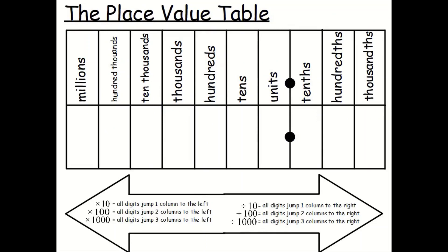Can you have a look at what it says at the bottom here? If you're multiplying by 10, all digits jump one column to the left. If you're multiplying by 100, all digits jump two columns to the left. If you're multiplying by 1000, all digits jump three columns to the left.